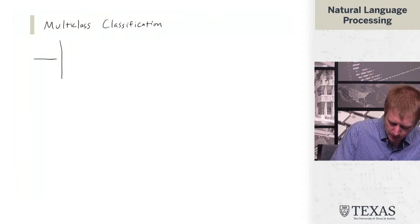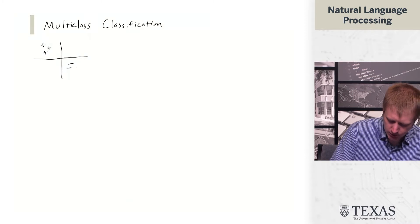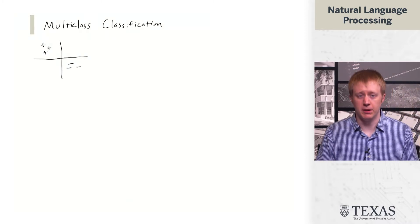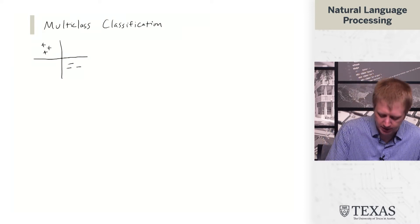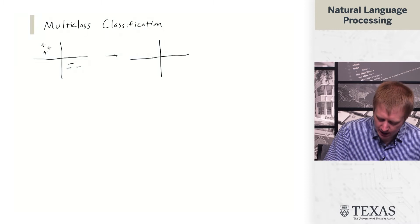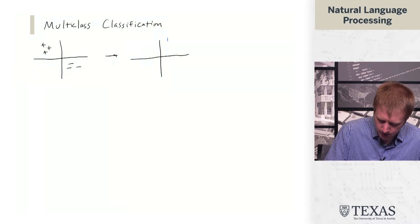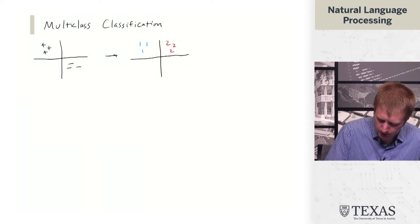In this segment we're going to talk about multiclass classification. So far we've talked about binary classification where we have points in space labeled as either positive or negative. Now we're going to think about having points that might come from multiple classes.